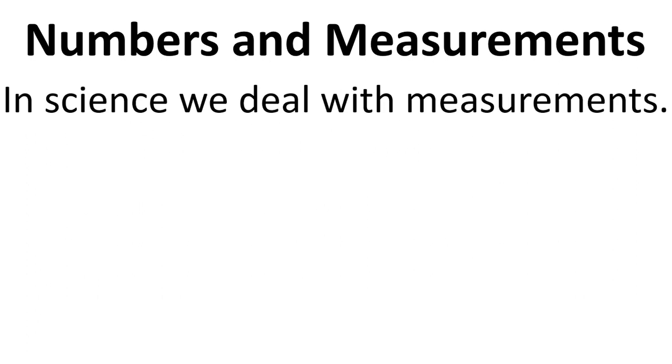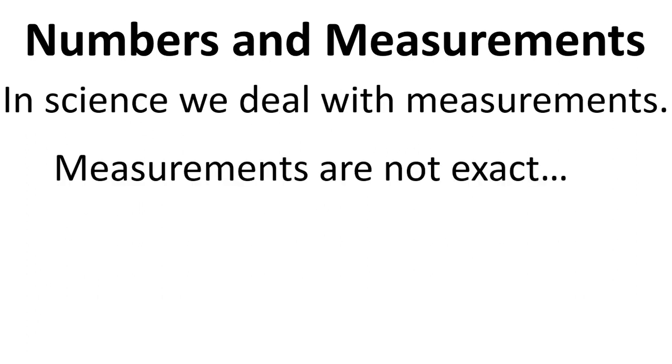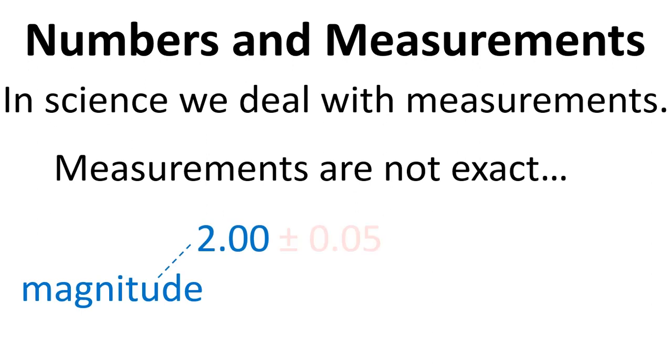Now in science we deal with measurements and measurements are not exact. So if I give you the number 2, it will have an error or an uncertainty associated with it. And we also need to have units.